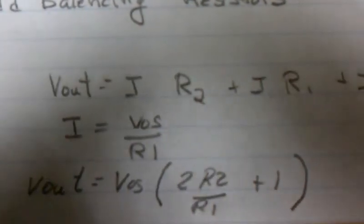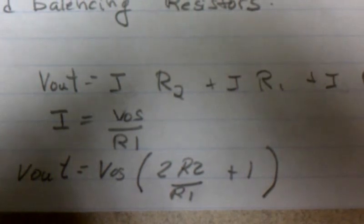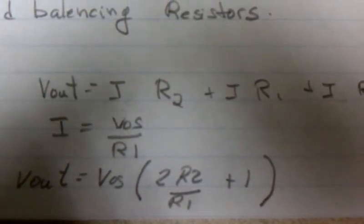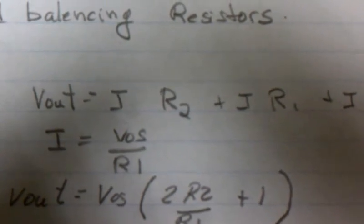So solve for Vout and Vos, and we get V offset times 2 times R2 divided by R1 plus 1.